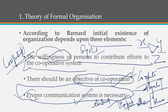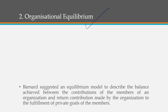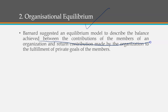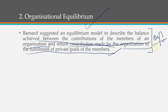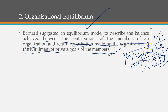The second contribution is organizational equilibrium. Bernard defined it as the balance between the contribution of the members of the organization and the return contribution made by the organization to fulfill the private goals of the member. Employees working in an organization contribute toward organization goals, but at the same time they also have their personal goals and career goals, which are equally important.